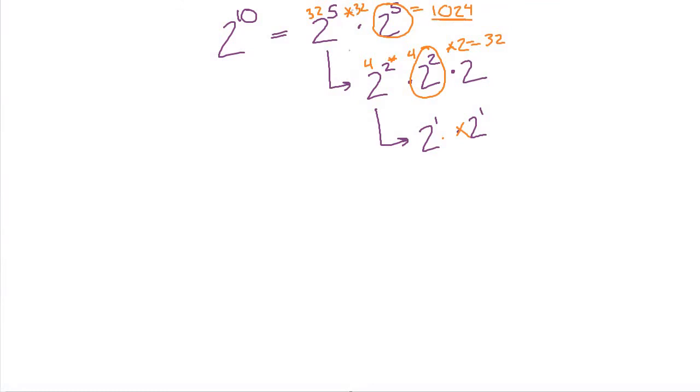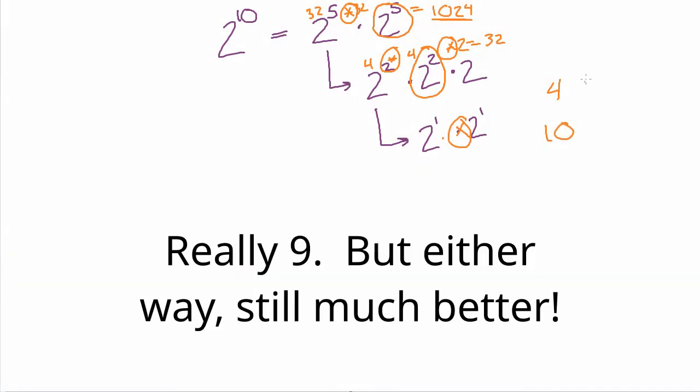And now how many multiplications did we do? We had to do 1, 2, 3, 4 multiplications to get this answer. If we did it the sort of more naive approach where you just times the 2's together 10 times, then we would have had 10 multiplications.